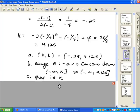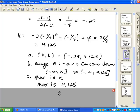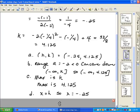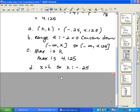If I look at it on the graph, it has a maximum. The minimum or the maximum is always k, so the maximum in this case is 4.125. The axis of symmetry is always x equals h. h is negative 0.25, so my axis of symmetry is x equals negative 0.25.